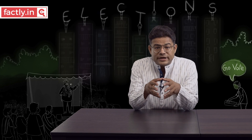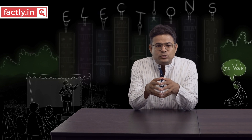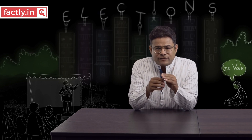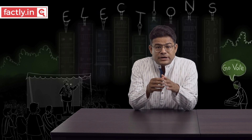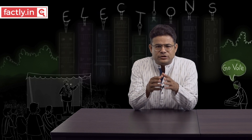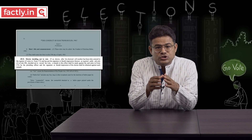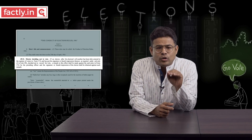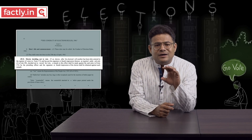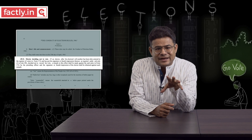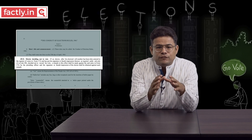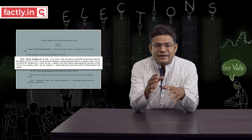Many people don't know there was previously an option for voters to give negative votes. This option existed under Conduct of Election Rules 1961, Rule 49O, where any voter who decided not to vote could inform the presiding officer and have their decision recorded.